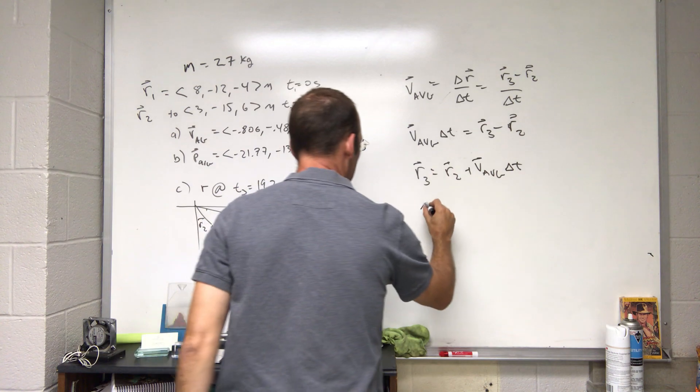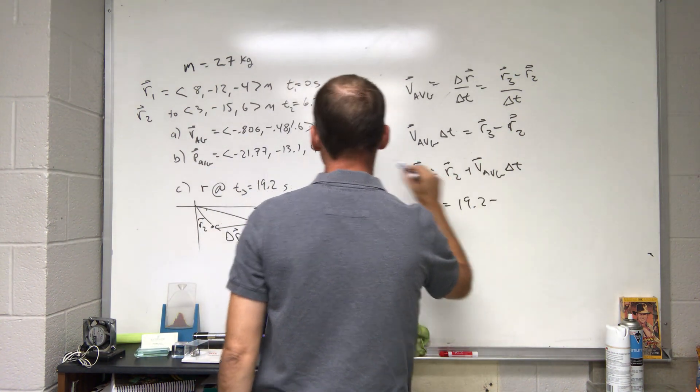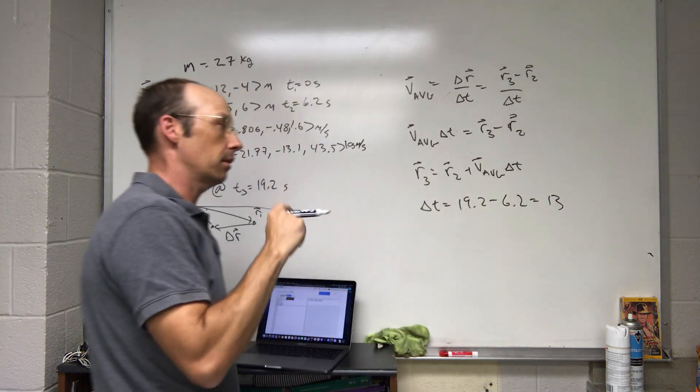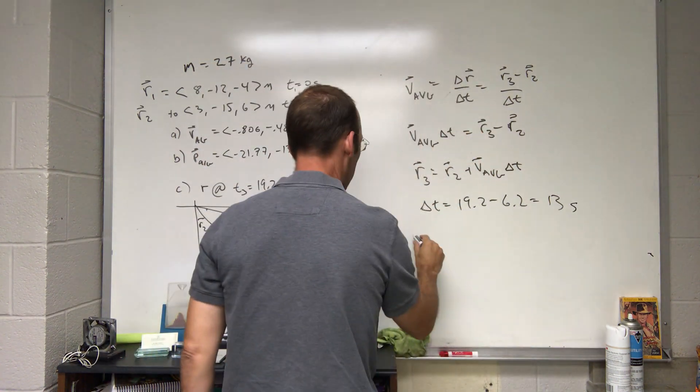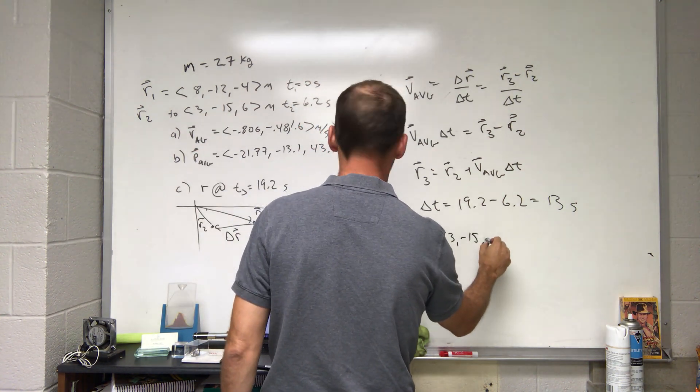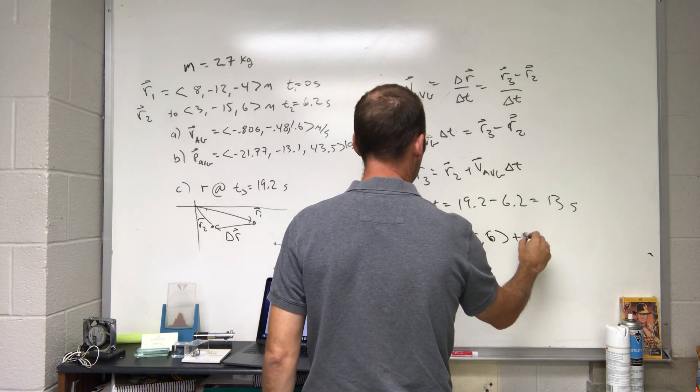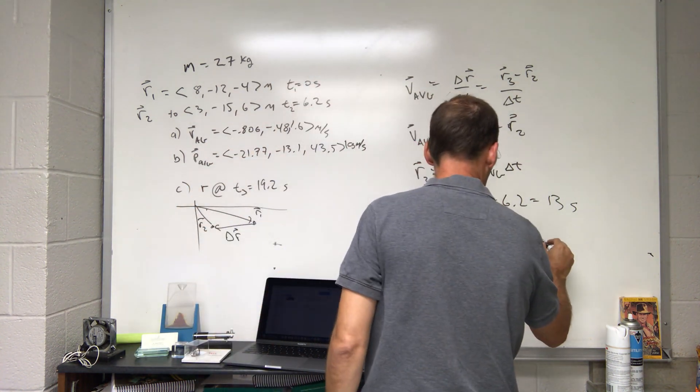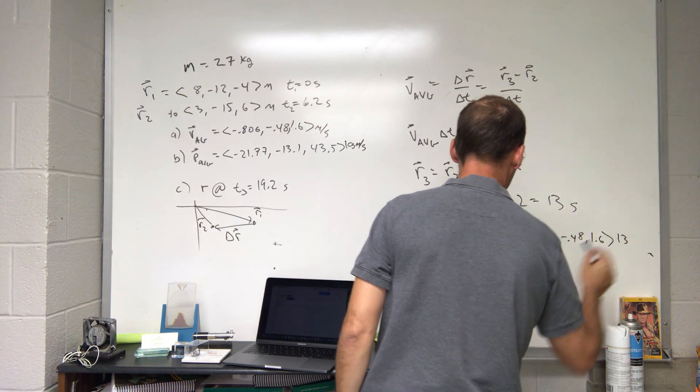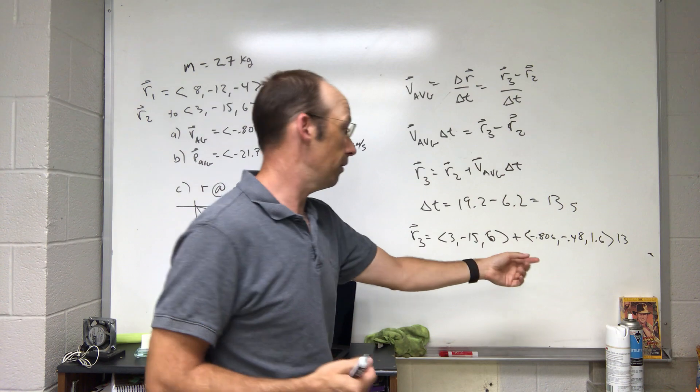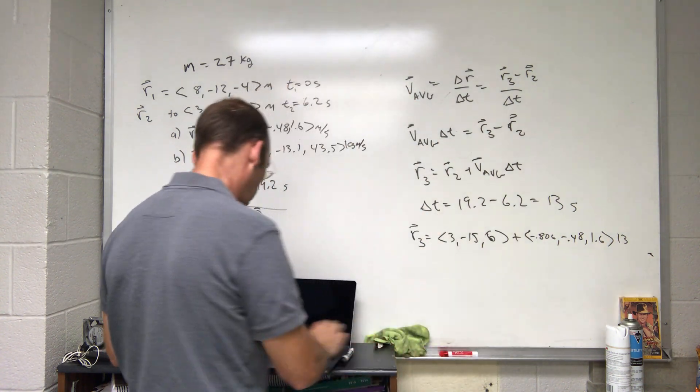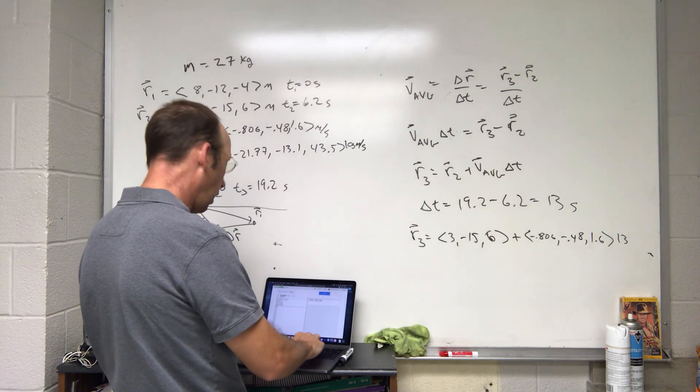I know r2, I know v average. Delta t is going to be equal to 19.2 minus the time at position 2, which is 6.2, so it's going to be 13 seconds. Now I can calculate r3. It's going to be r2, which is (3, -15, 6), I'm going to leave off the units just to make it shorter, plus the v average, which is (-0.806, -0.48, 1.6) multiplied by 13. So now I need to calculate this. The first thing is to make this a vector, so I need to multiply 13 by each one of these things, and then I can add the two vectors by adding the components. I'm going to do it all at once.